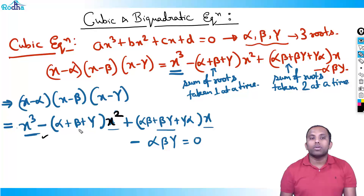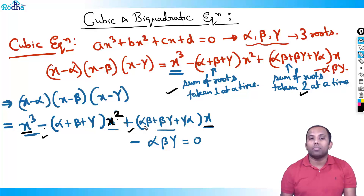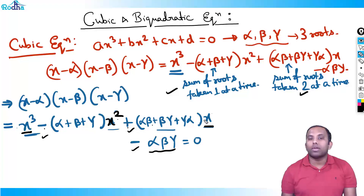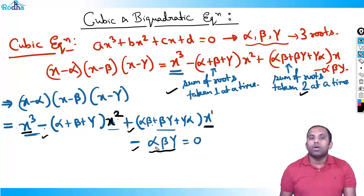The coefficient of x is the sum of roots taken two at a time: αβ+βγ+γα. Then after a plus sign comes minus sign. After x³, x², x¹, now x⁰ — constant term, no x. Taking all three at a time gives one term: αβγ = 0.